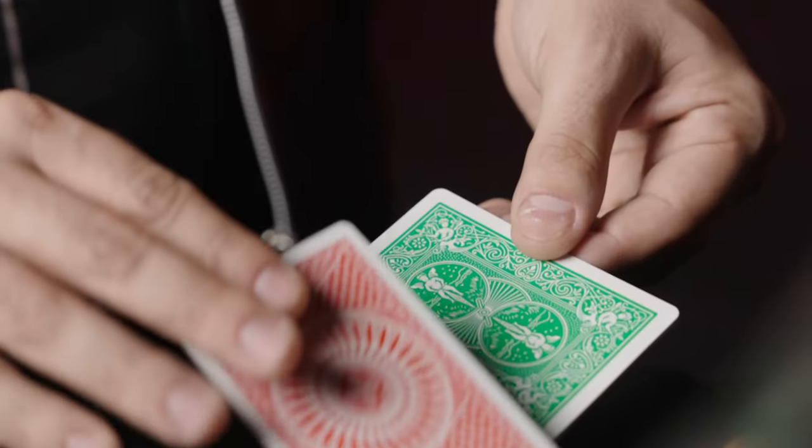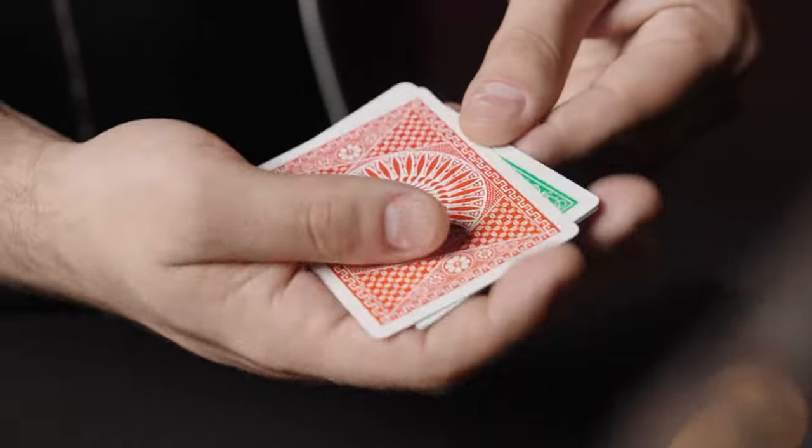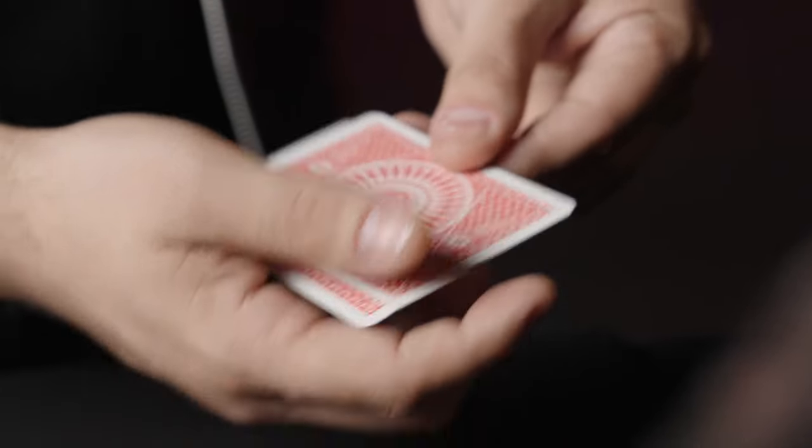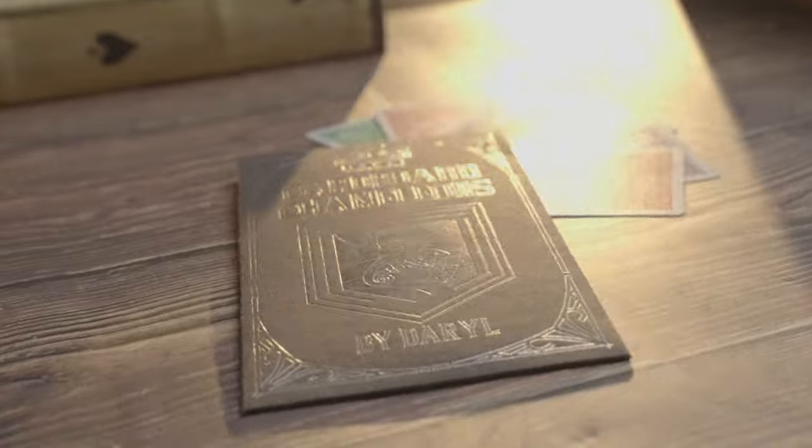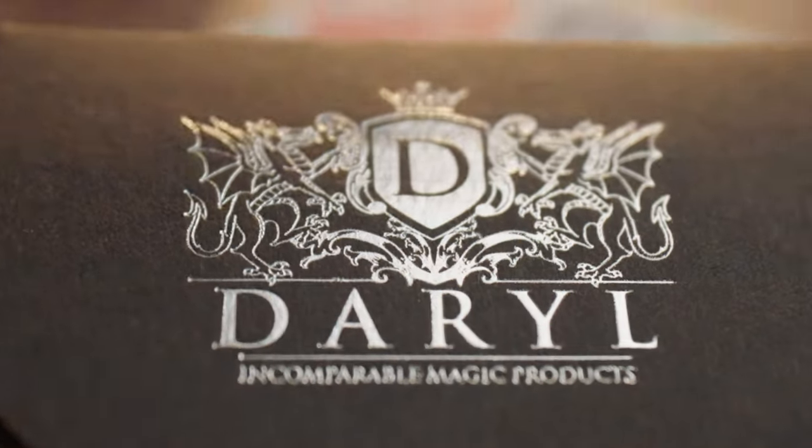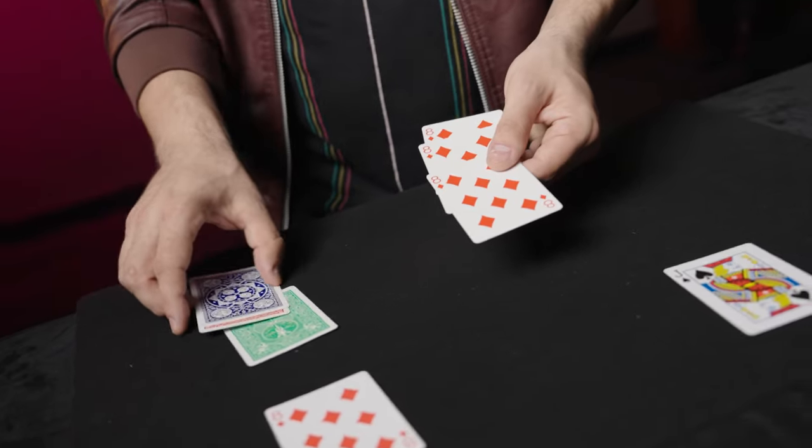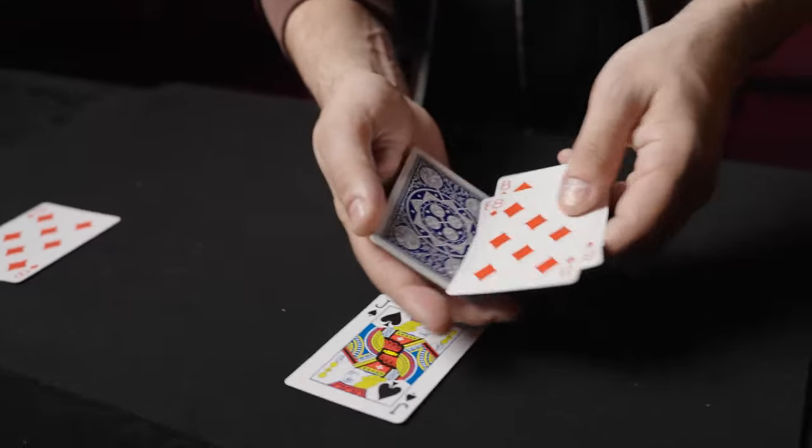Daryl's Cardboard Chameleon is a masterpiece. It is by far one of the most visual and stunning pieces of close-up magic you can perform. This was the feature routine in which Daryl earned the gold medal at FISM, and now you can own and perform this award-winning routine.